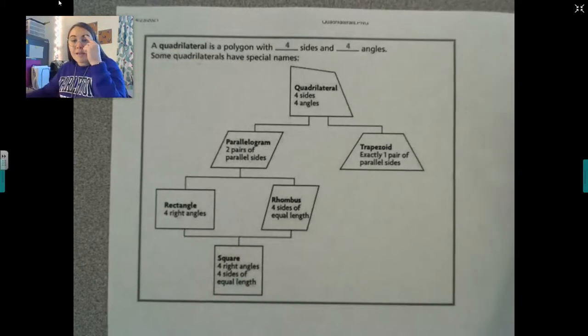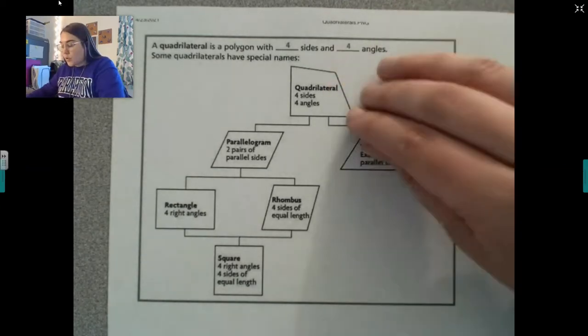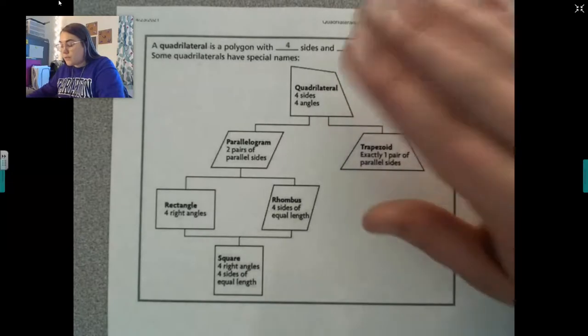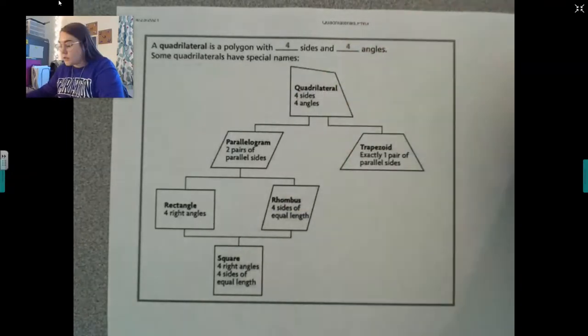So what I do is I go through that checklist in my head as I'm looking at a shape. So I say, okay, quadrilateral at the top has four right angles or four angles and four sides. It doesn't matter if it's all funky looking like this one is. It just has four angles and four sides.